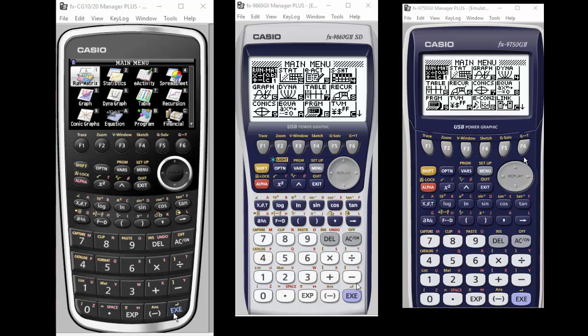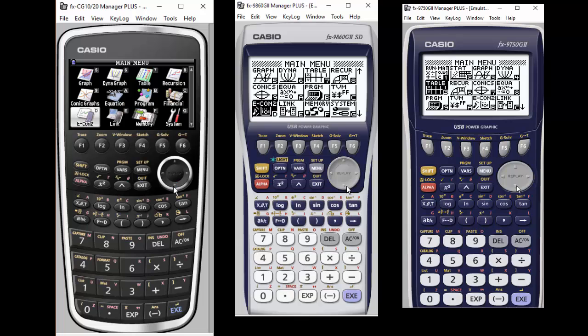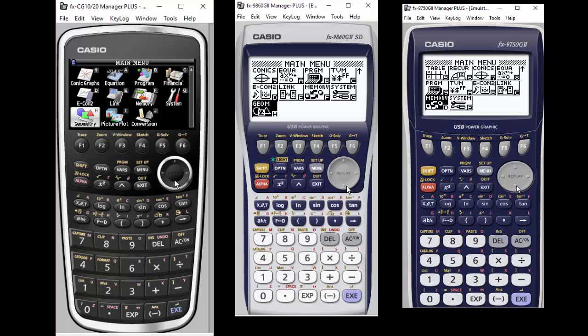One major difference is the Casio Prism is in color, but you'll see that for the most part, they have the same layouts. The calculators are a different size, so they're maybe more condensed, but they have the menu options.